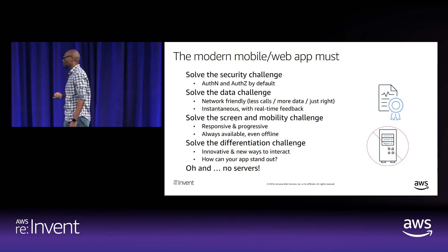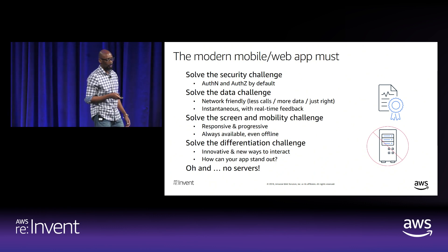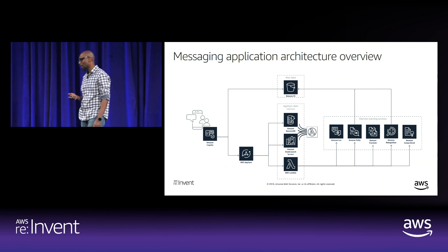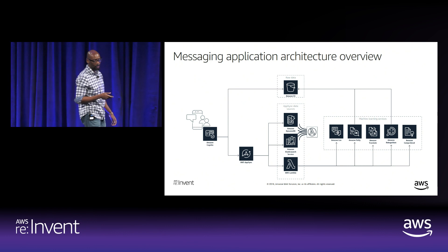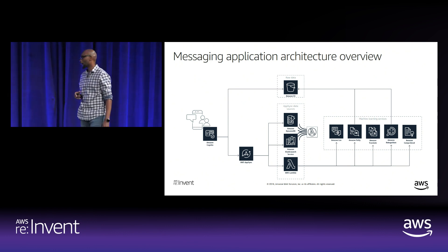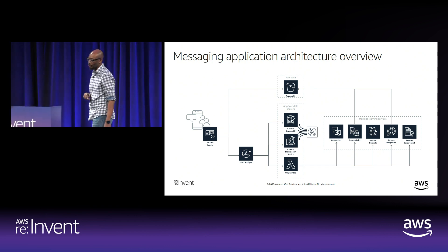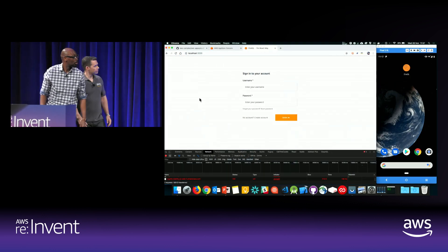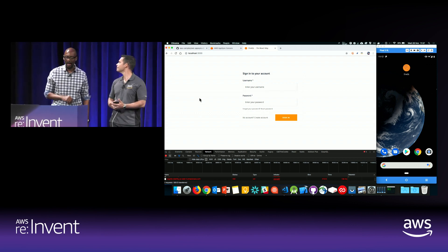We can ask ourselves: what does an application that actually solves these challenges look like? We actually implemented a messaging application that addresses some of those challenges. Here's a high-level overview of what this application looks like. Before we dig into the architecture, let's actually walk through a demo of an application that implements and solves some of those challenges.